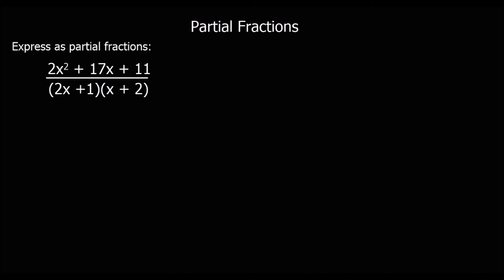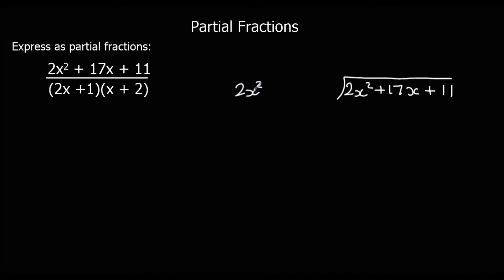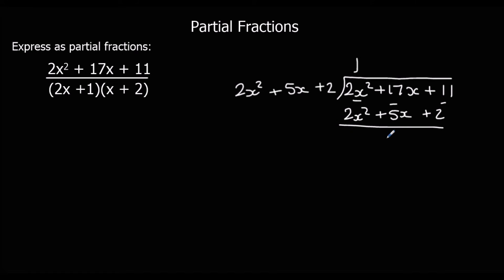So we've got a quadratic on the top and a quadratic on the bottom, so again we need to change it into a proper fraction before we split it into partial fractions. We divide the numerator, 2x squared plus 17x plus 11, by the denominator, which expands to 2x squared plus 5x plus 2. How many 2x squareds go into 2x squared? That's 1. We times through by 1: 2x squared plus 5x plus 2. Taking away, we're left with 17 − 5 = 12x, and 11 − 2 = 9, so the remainder is 12x + 9.